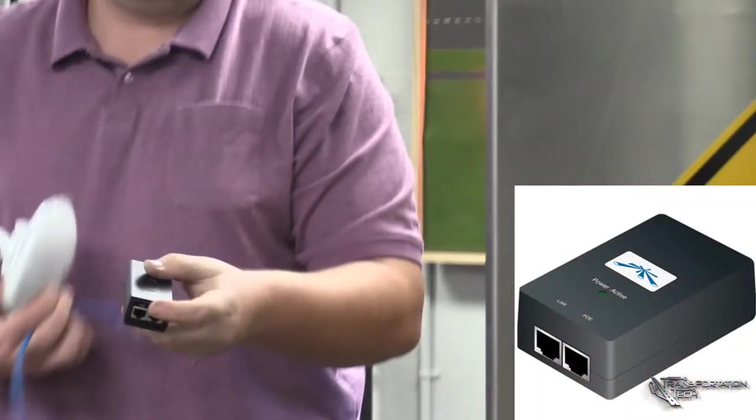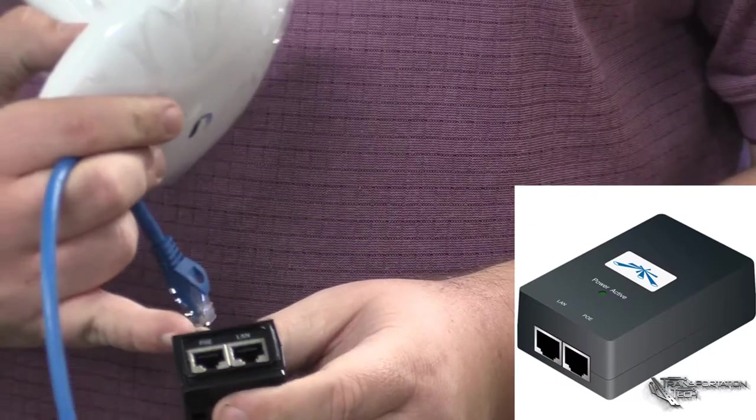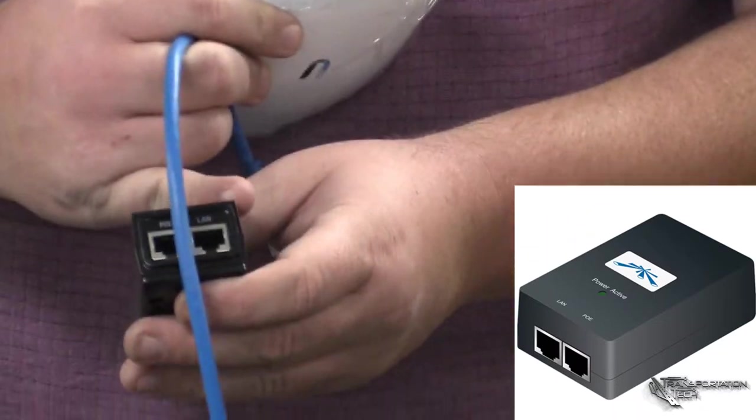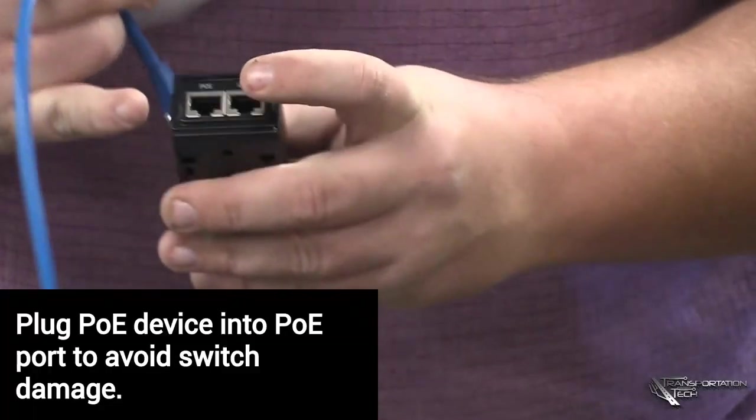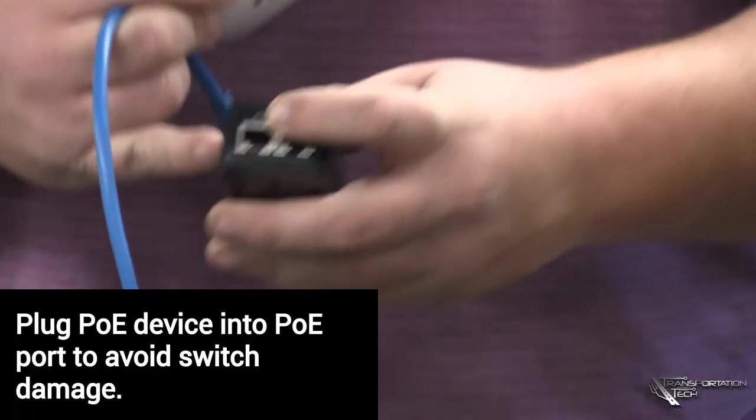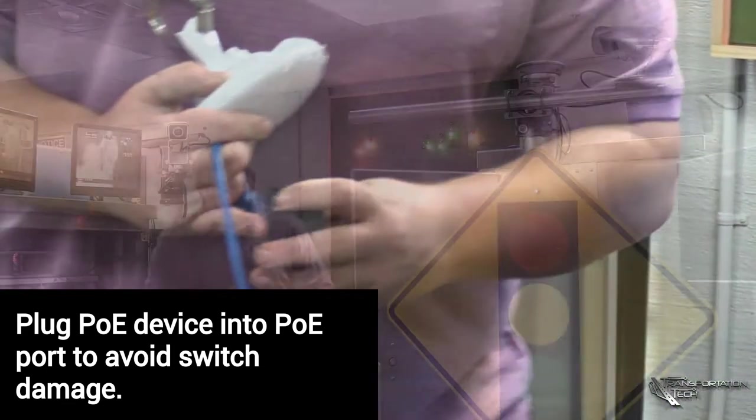This is what a PoE injector looks like. You have power that comes in 120 AC that then goes out. This one states that there's a PoE and a LAN. It's always important to plug your PoE devices into the PoE side because you have voltage going to it. If you plug this into a switch you can fry a switch.